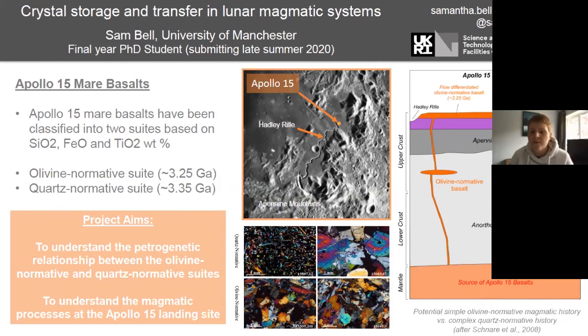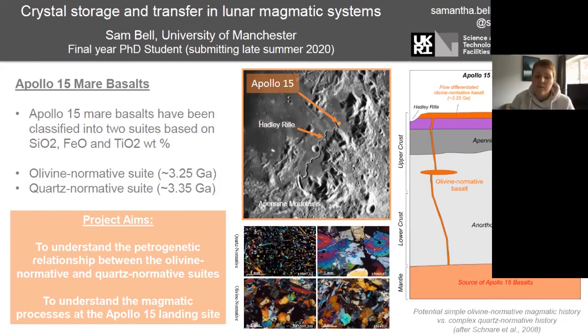There's some debate about how we get these different chemistries, even though the two suites have similar eruption ages and were both found at the same site. One idea is that the quartz normative basalts might have had a more complex magmatic history than the olivine normative basalts. I'm using non-destructive petrological techniques on Apollo 15 Mare basalt thin sections to try to understand this relationship between the two suites and get an idea of what magmatic processes might have been going on at the Apollo 15 landing site.